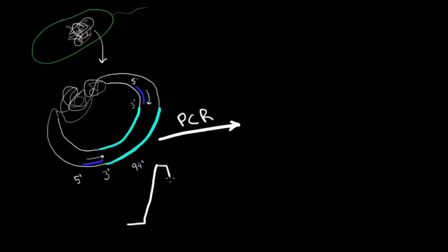And then we decrease the temperature down to something like 60 degrees. And this is a good temperature for primers to then find their place, their complementary sequence here and here, and bind. This gives them an opportunity to do that. We stay there for a little while longer.